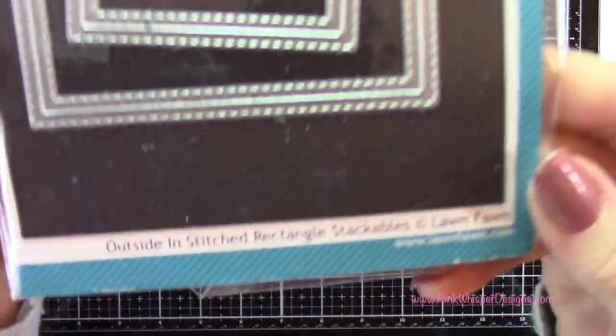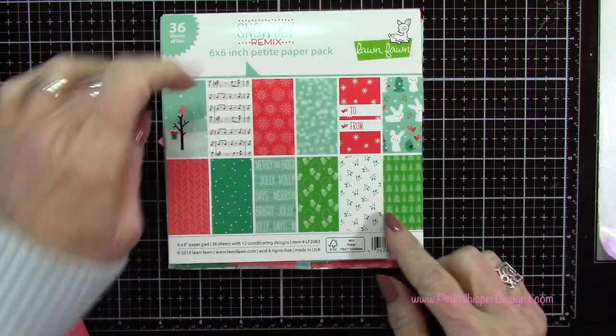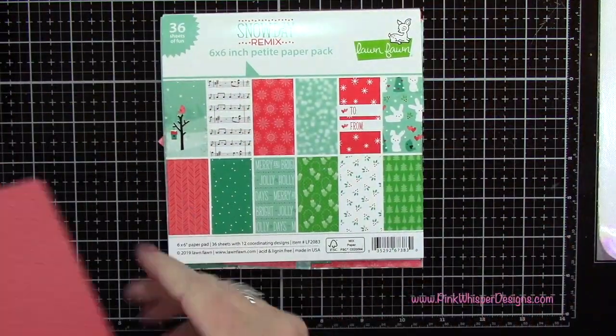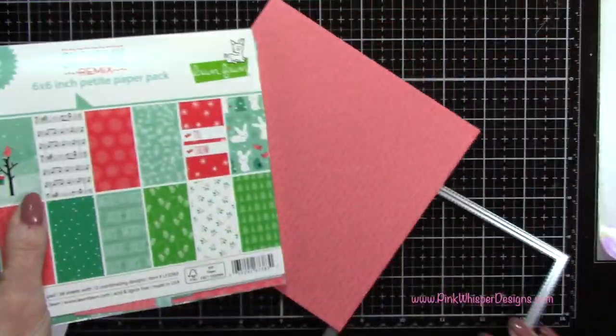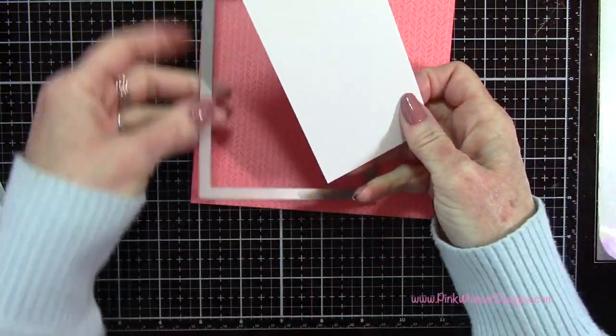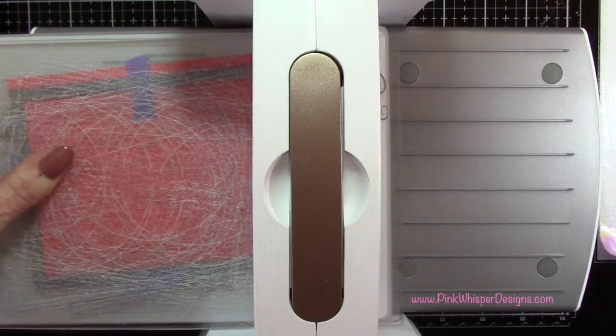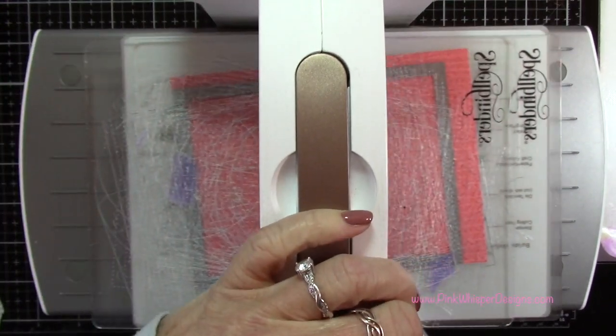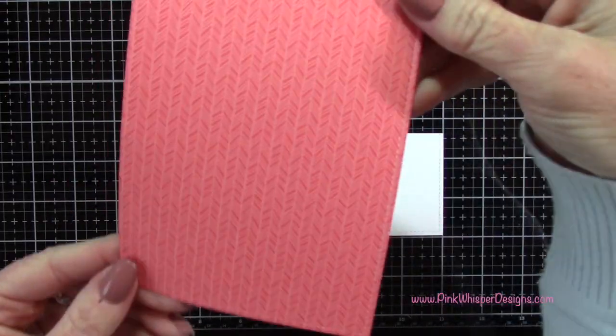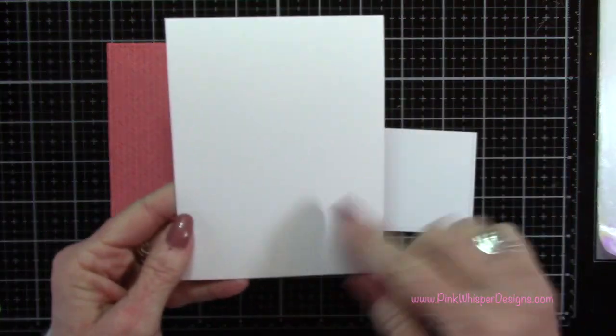Now I'm going to grab this largest die from the outside in stitched rectangle stackable dies. This is the Snow Day Remix Petite Paper Pad. We're going to go in the portrait direction, but you could go either way. I want this to look like the wallpaper. Then I have a second piece of white cardstock, this is the Bristol Smooth White. I'm going to die cut both of those and I only need a little portion of the white.